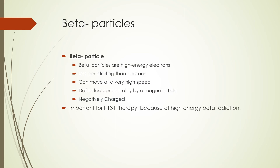Beta minus particles are high energy electrons that are less penetrating than photons. They can move at very high speed and are deflected considerably by a magnetic field. They are negatively charged. Beta minus is important for iodine-131 therapy because of high energy beta radiation. In iodine-131 therapy, the patient ingests radioactive iodine in capsule form or in a drink. Because the thyroid needs iodine to work, the radioactive iodine is absorbed in the thyroid, and the beta minus radiation from the iodine destroys both cancerous and normal thyroid cells.